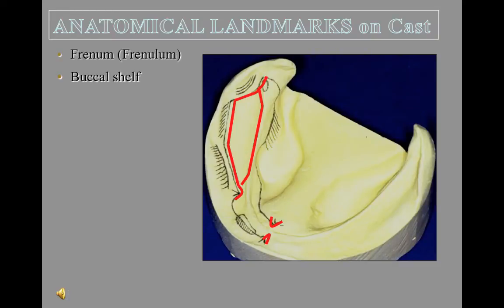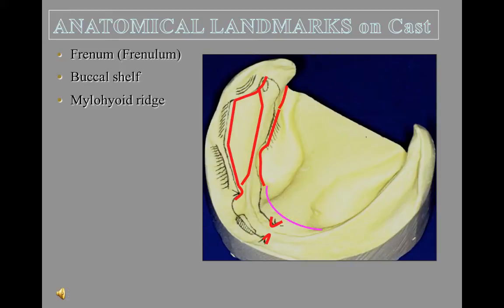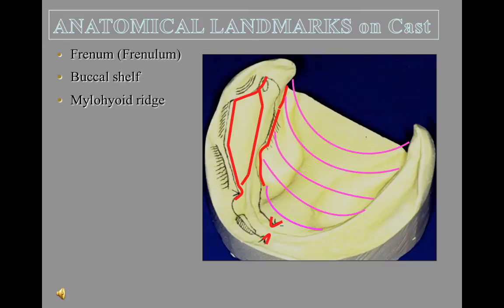The buccal shelf is the main denture bearing area and is able to take forces of mastication the best. You will feel a ridge on the lingual surface of the mandible called the mylohyoid ridge, which is the attachment area for the mylohyoid muscle and dictates the depth of the lingual flange of the denture. We cannot violate this muscle through the areas of second premolar to second premolar, as the muscle fibers of the mylohyoid run perpendicular to the ridge and are very short anteriorly.